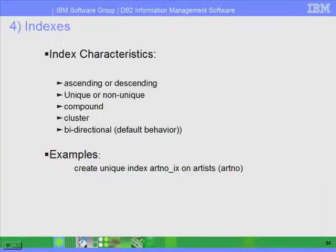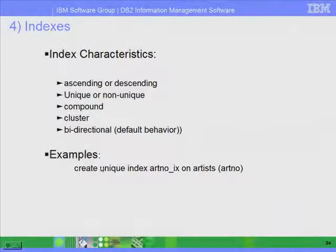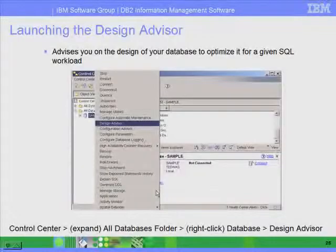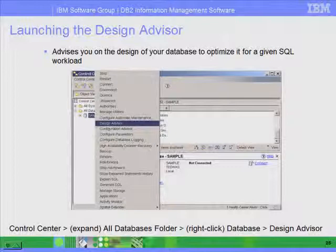With respect to indices, we support ascending or descending indices, unique or non-unique, compound, cluster, and so on. This is a simple example of how to create a unique index. You could design your own indices, but with DB2 we have a tool called the Design Advisor. I talked briefly about the Design Advisor when we were discussing tools.